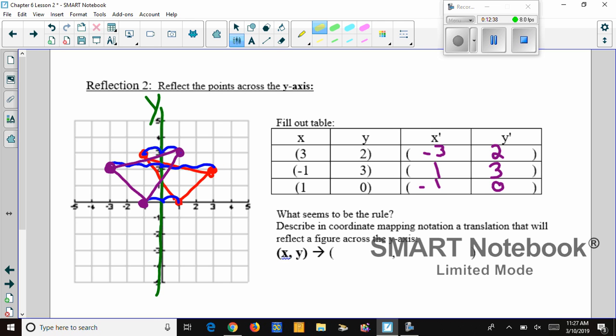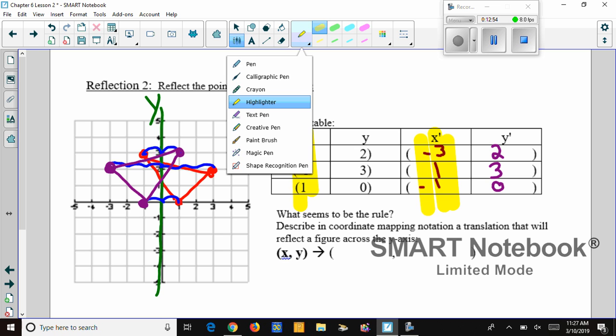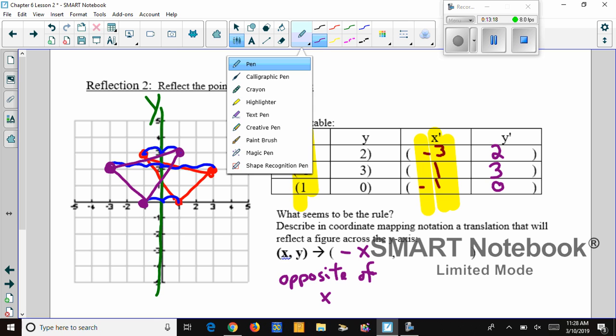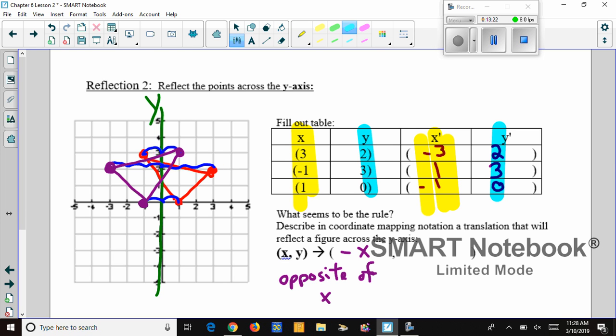Now let's see if we can figure out what the rule is. Like before, I'm going to highlight my x's first. Let's focus on the x's. Well, if I look, I went from 3 to -3, -1 to 1, and 1 to -1. That means for my x, it's going to go from being x to the opposite of x. So opposite of x. Let's see if the y's change. There is no change in our y's, so we'll mark that y does not change.